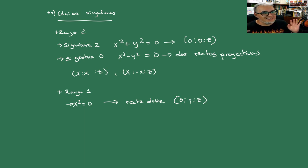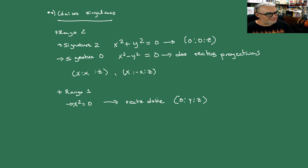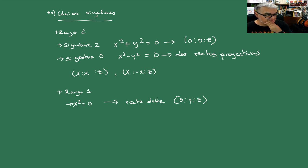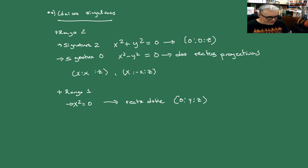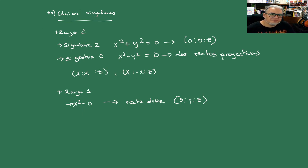Entonces, estas son todas las cónicas singulares. ¿Cuántas tenemos? 1, 2, 3, 4. Y si cuentas el vacío, son 5. Si consideras que el conjunto vacío no es una cónica, entonces son 4; si sí la cuentas como cónica, son 5.